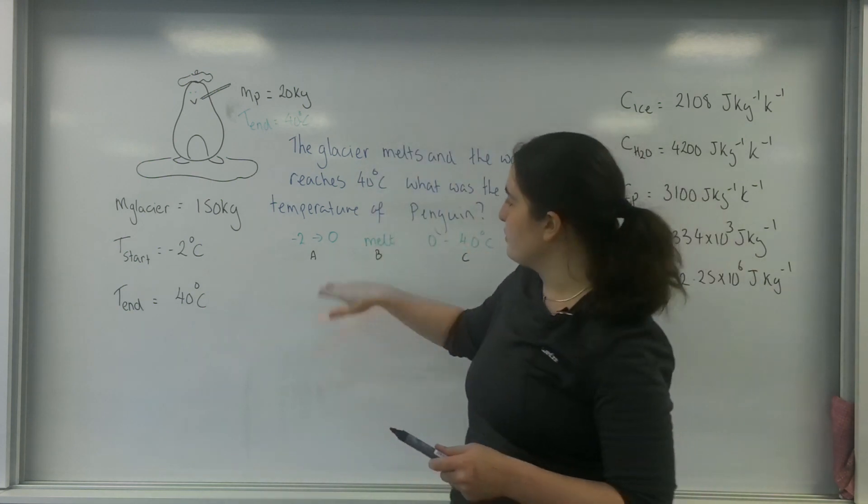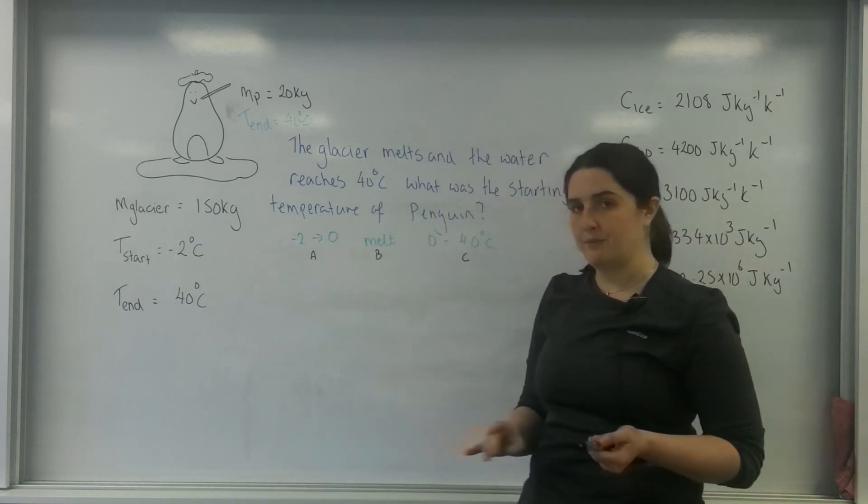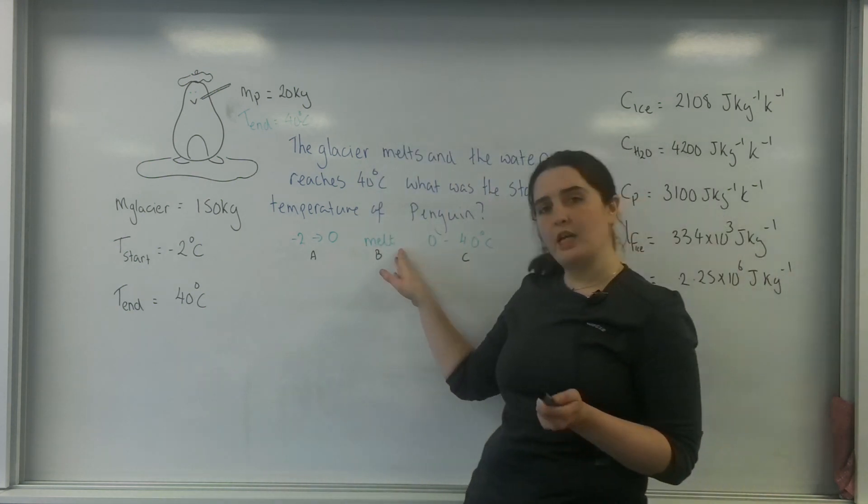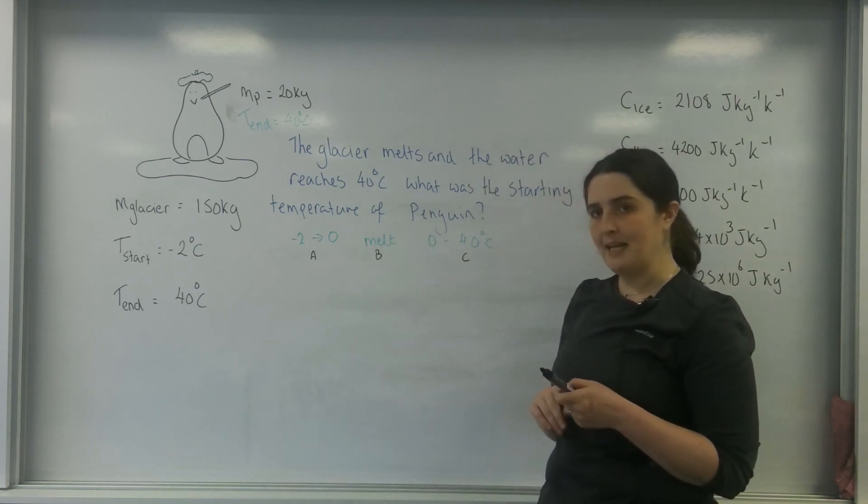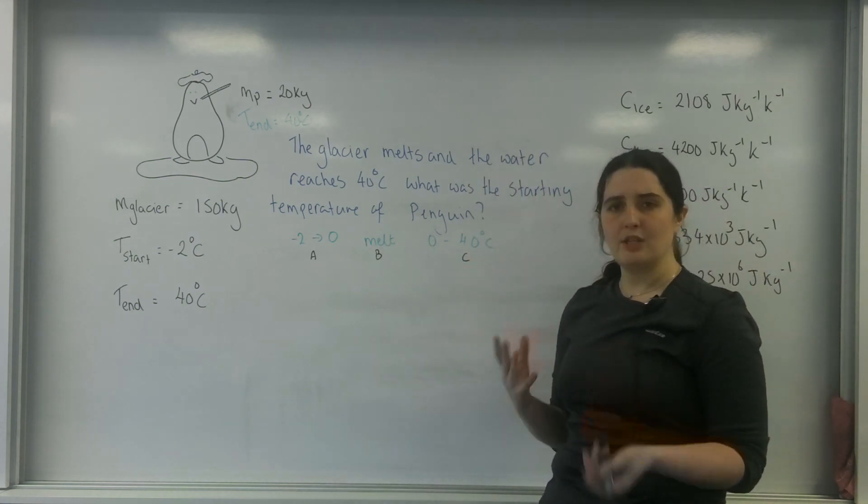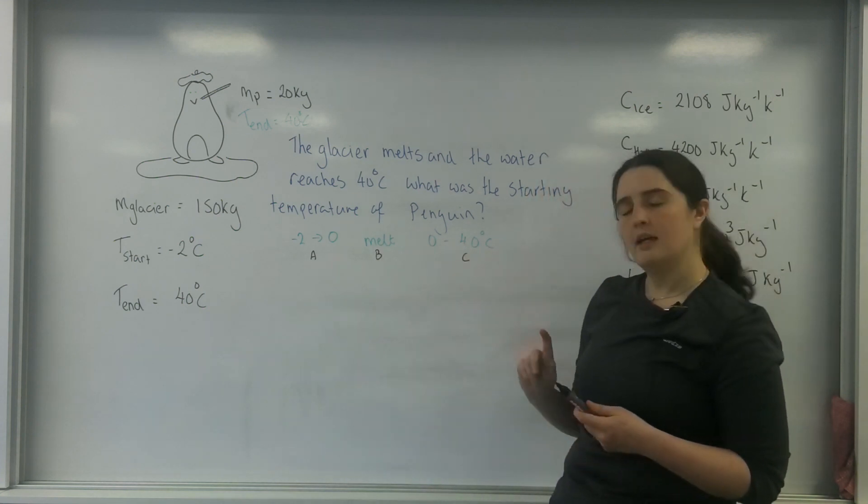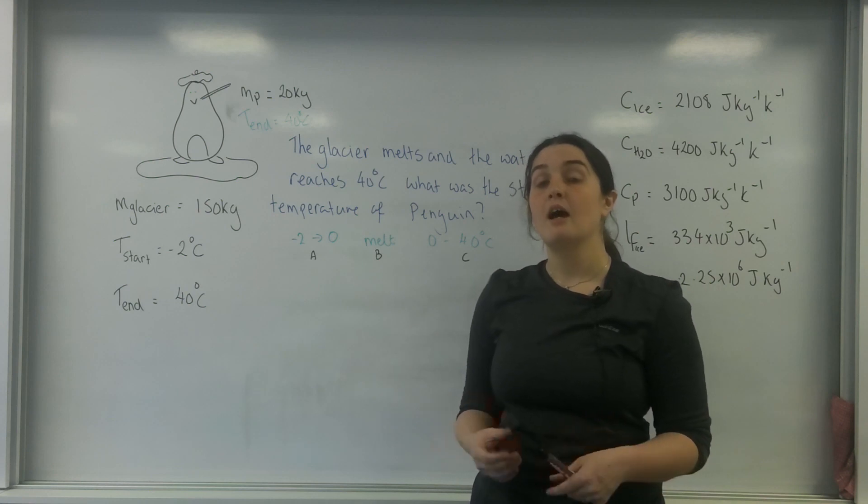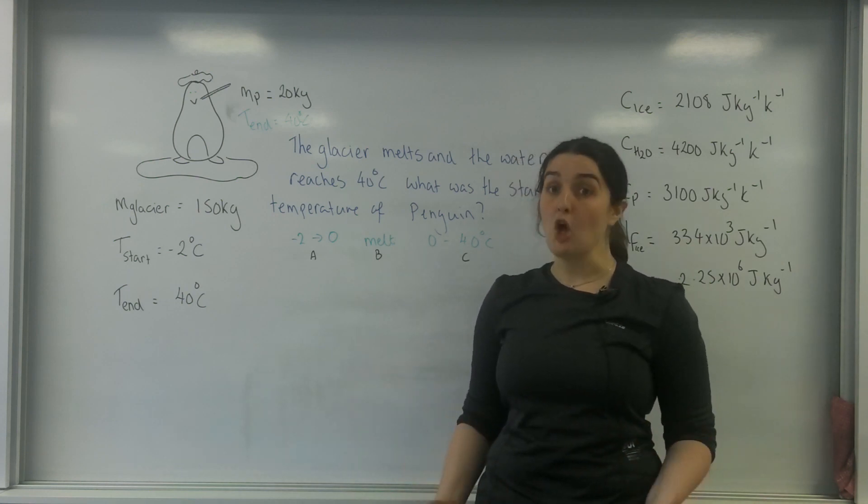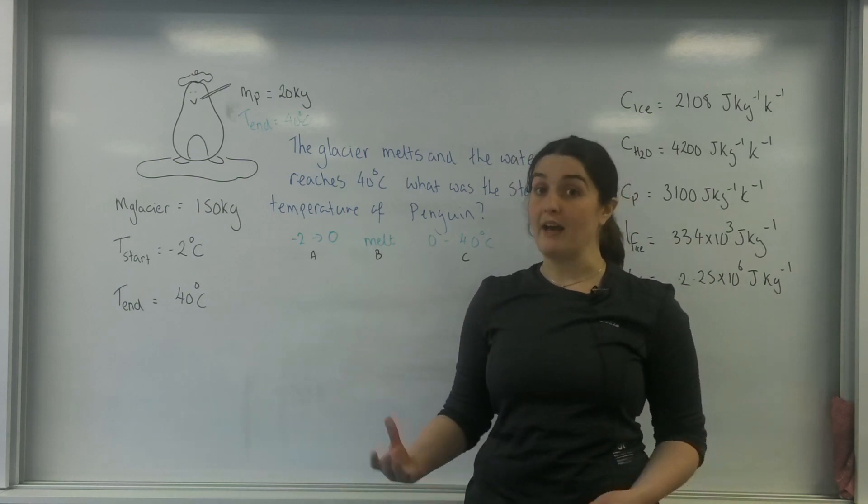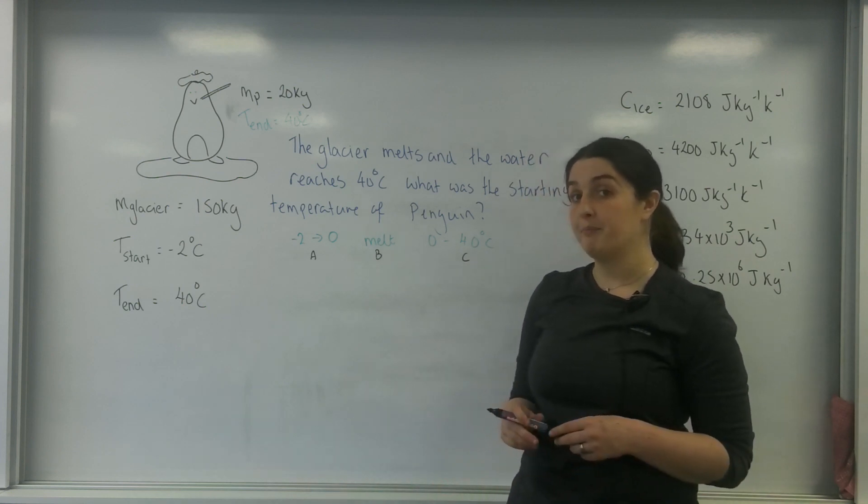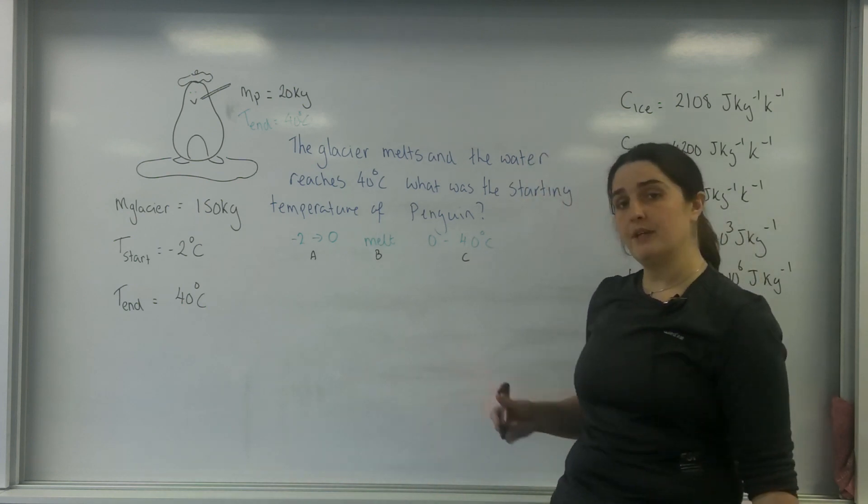And so this one is all about temperature change, so that's going to be specific heat. This one is about change of state, so this one's going to be latent heat. And this one here again is temperature change. And if I can find out in total how much energy was used to do this, that is how much energy the penguin has lost. And therefore, I could work out the change of temperature of my penguin.